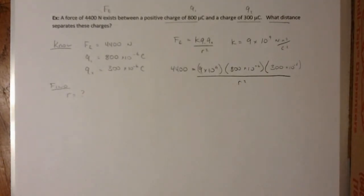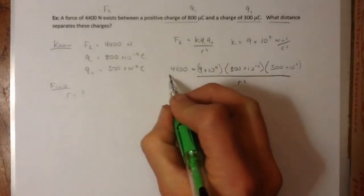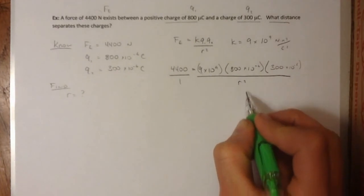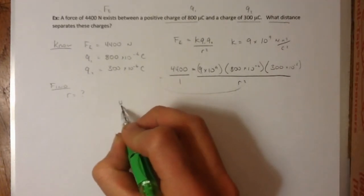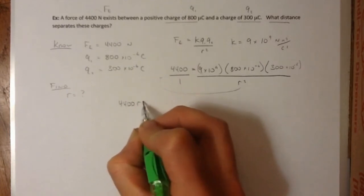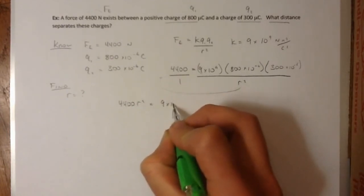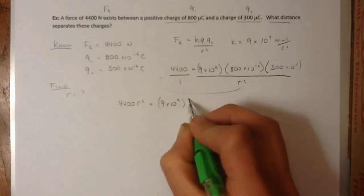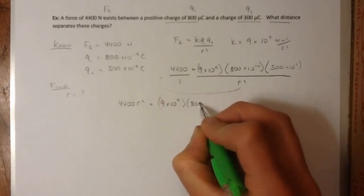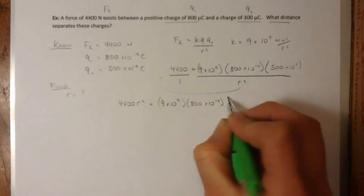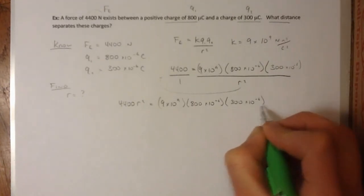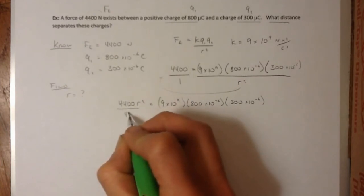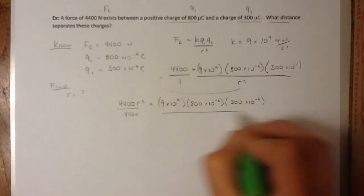Now, in terms of how to solve from here, you can kind of think of this as being like over 1. And then you could cross multiply, like bring that over. So you'd have something like 4,400 R squared is equal to 9 times 10 to the 9, 800 times 10 to the negative 6. And then 300 times 10 to the negative 6. And then your next step would be divide both sides by 4,400.